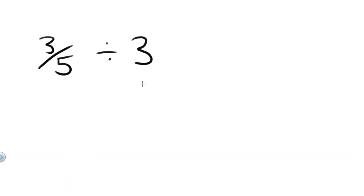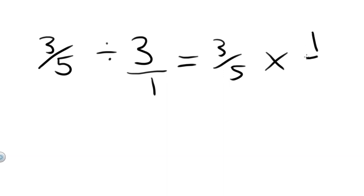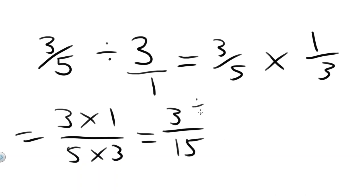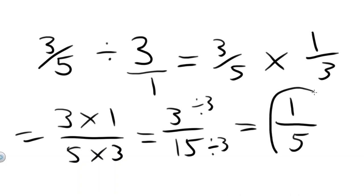What if we have a fraction divided by a whole number? 3 fifths divided by 3. Well the answer should be obvious here — 3 fifths divided by 3 is just 1 fifth. But how do we work it out mathematically? We can treat all whole numbers as simply a fraction by placing them over 1. So 3 over 1, 3 divided by 1, is just 3 — so 3 and 3 over 1 are the same thing. Then we work it out normally: 3 over 5 multiplied by the reciprocal of 3 over 1, which is 1 over 3. Tops by tops: 3 times 1 over 5 times 3. 3 times 1 is 3, and 5 times 3 is 15. We can divide top and bottom by 3 to simplify it. 3 divided by 3 equals 1, and 15 divided by 3 equals 5. 1 fifth is our final answer — as expected, 3 fifths divided by 3 is 1 fifth.